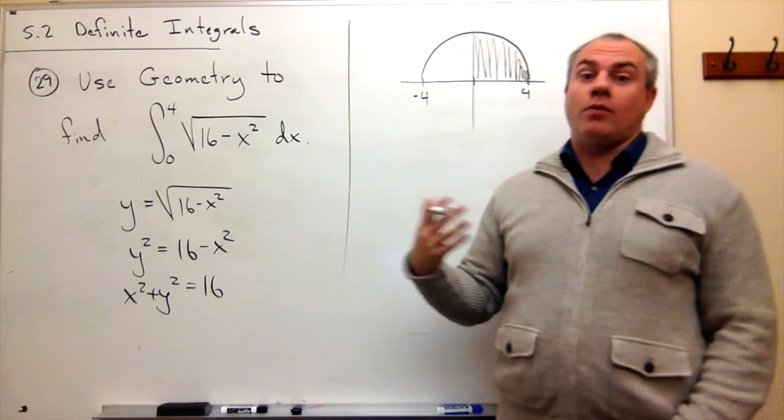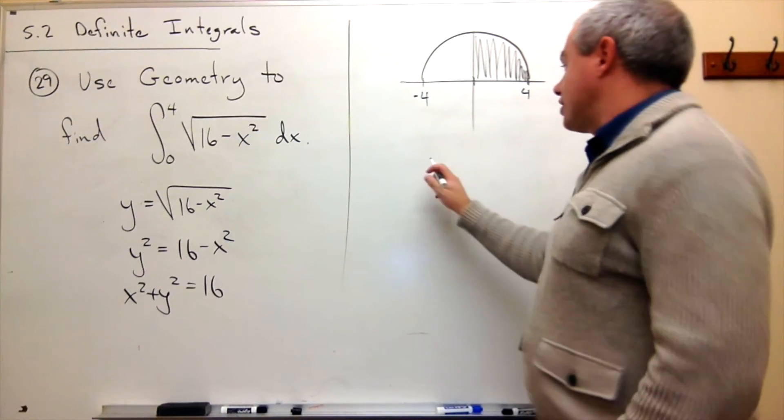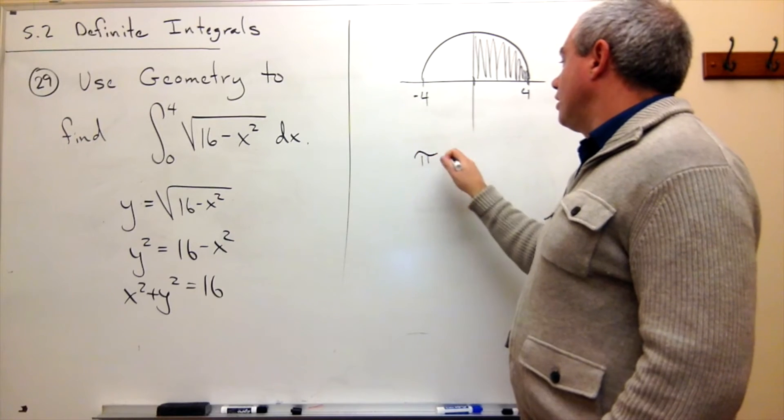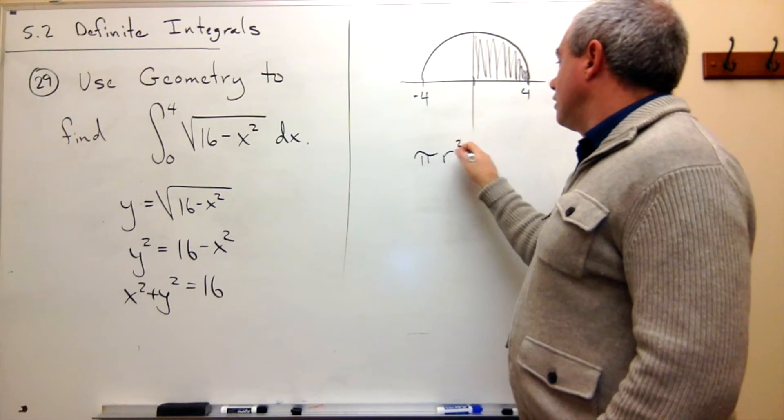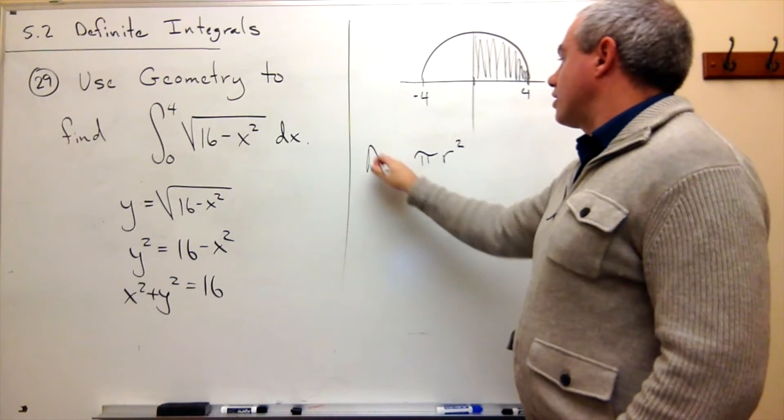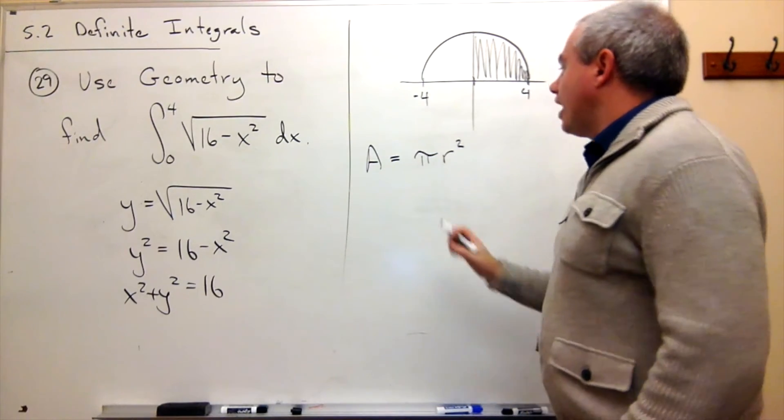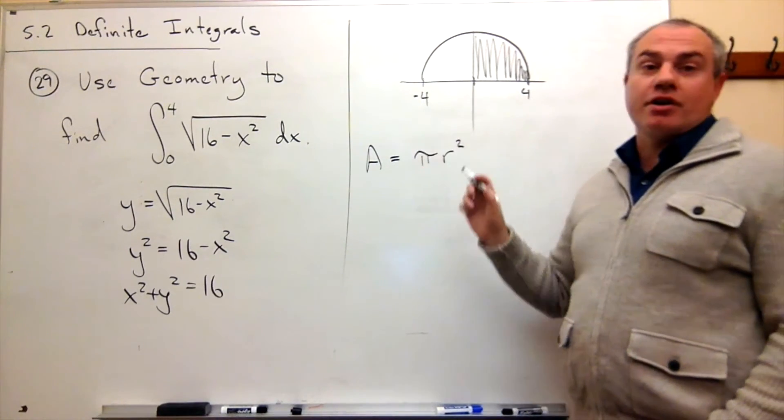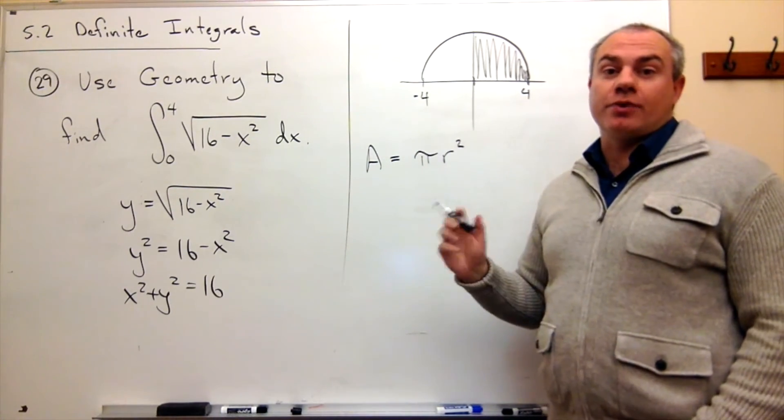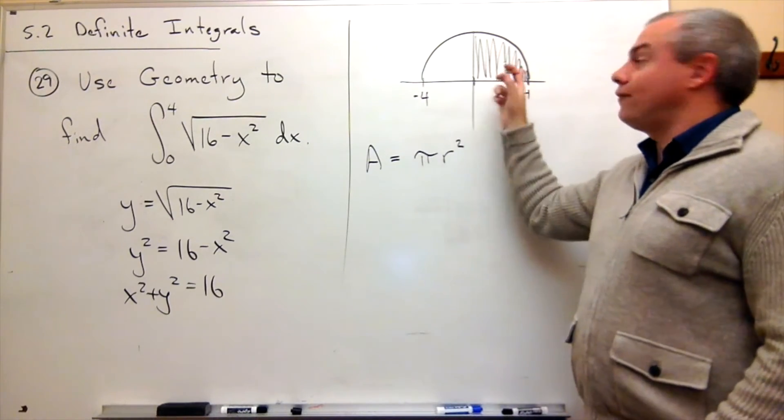Well, what's the area of a circle? The area of a circle is pi r squared. That's the area of a circle. But we don't have a whole circle here. How much of the circle do we have? We have 1 fourth of a circle.